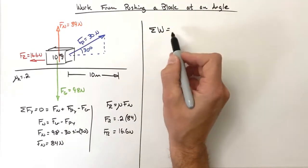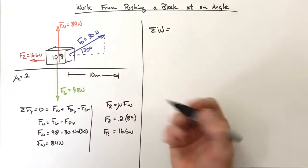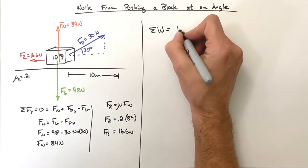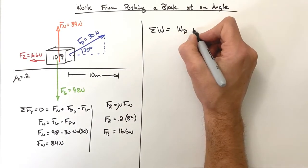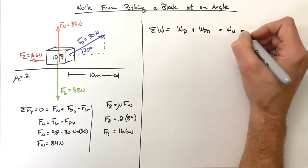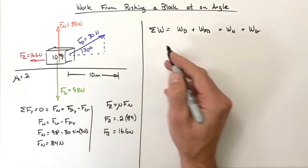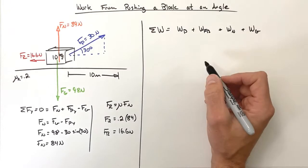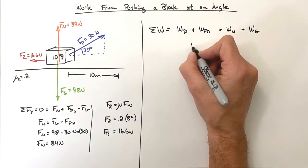What we're doing is trying to solve for the work done by all four of these forces: the work by the pull force plus the work by friction plus the work by the normal force plus the work by gravity. We're going to work out each of these works individually using our work equation.